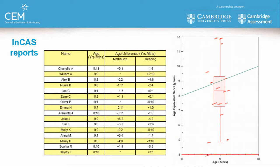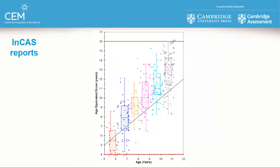It is also possible to show not just one class but how classes across the school are performing. This is a representation of a single-form entry school where you've just got one class per year group. As the years go by, you can see they start off just about in line with expectation — the mean level of attainment is on the green line — and they move on quite nicely each year. There's a little bit of a dip here, but they finish off doing quite well. It's the children at the top who you want to challenge, and it's the children towards the bottom of the graph who need careful attention to make sure they are getting the support they need.